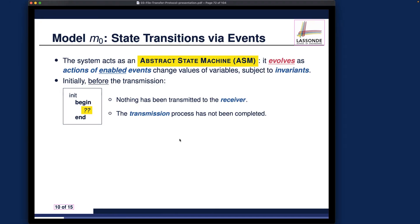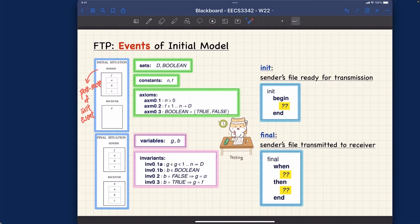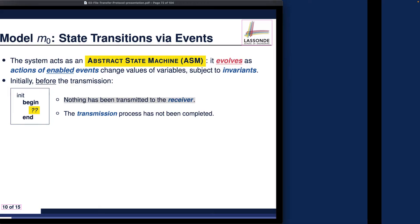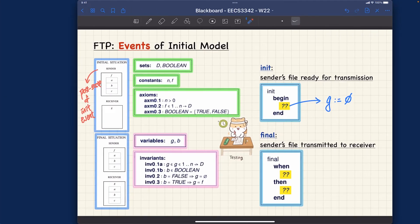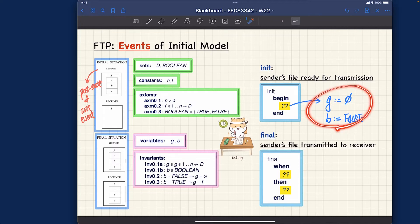We'll faithfully formulate the two conditions. Number one: nothing has been transmitted to the receiver — that means the receiver's file g should become the empty set after the init event occurs. Number two: the transmission process has not been completed — the relevant variable is b, so b becomes false. These are the two actions to specify so that after the init event occurs, all the invariants will be established.